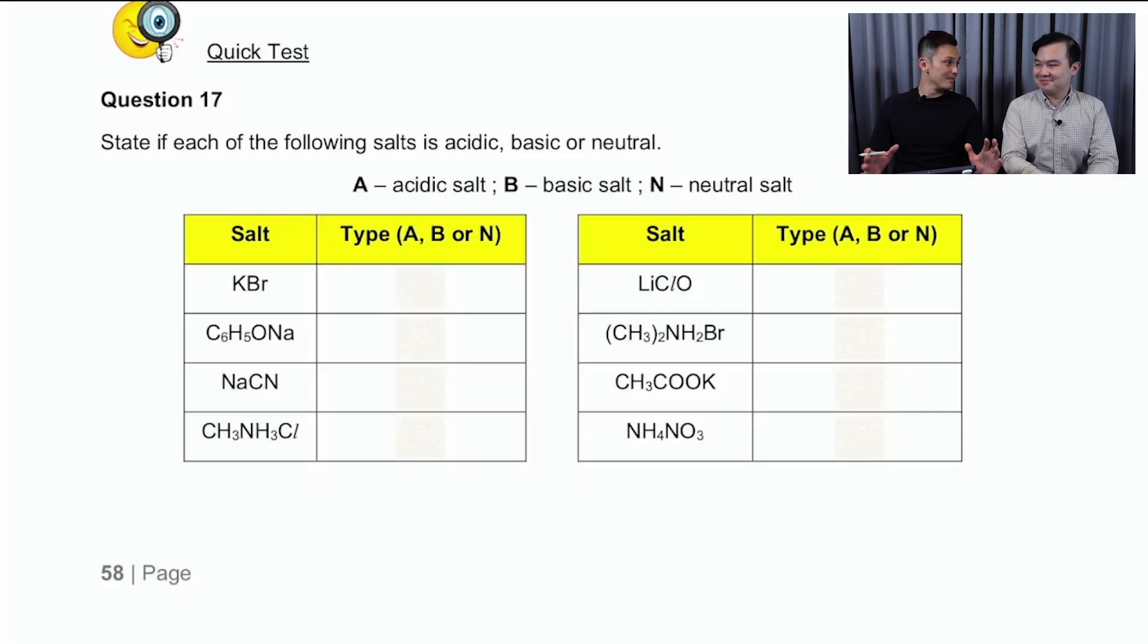Okay, I'm going to use the same method, the shortcut method that Mr. Leung has shared with us to try to solve for these four questions. Now, the first question you're looking at is KBr. Now, KBr came from KOH, which is going to be a strong base, and it also comes from HBr, which is a strong acid. Since both are strong, then this thing is going to be neutral. All right?